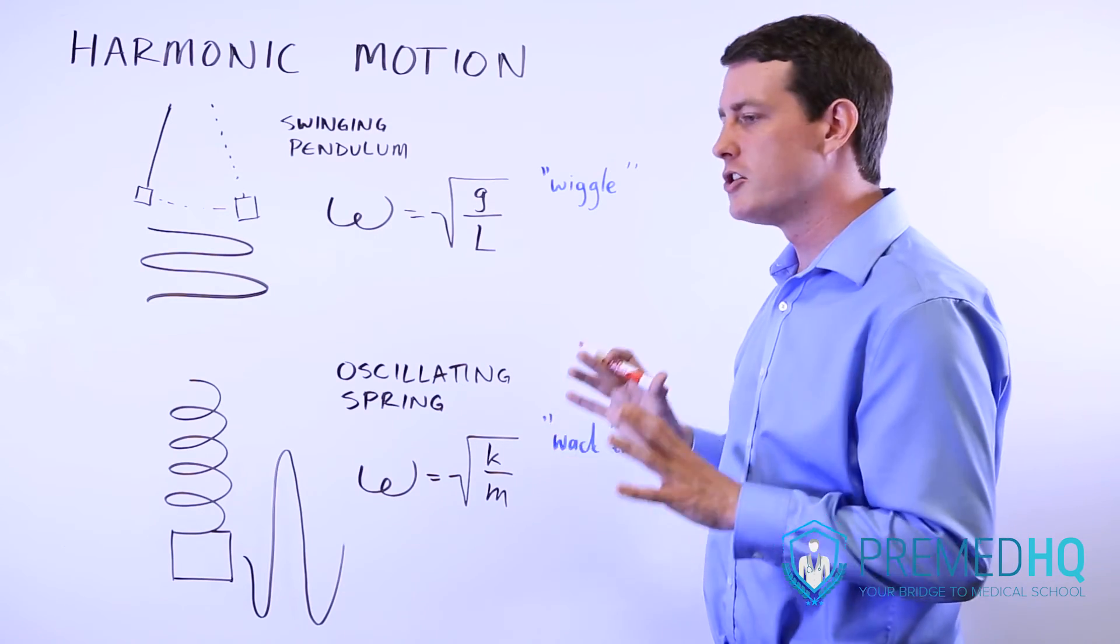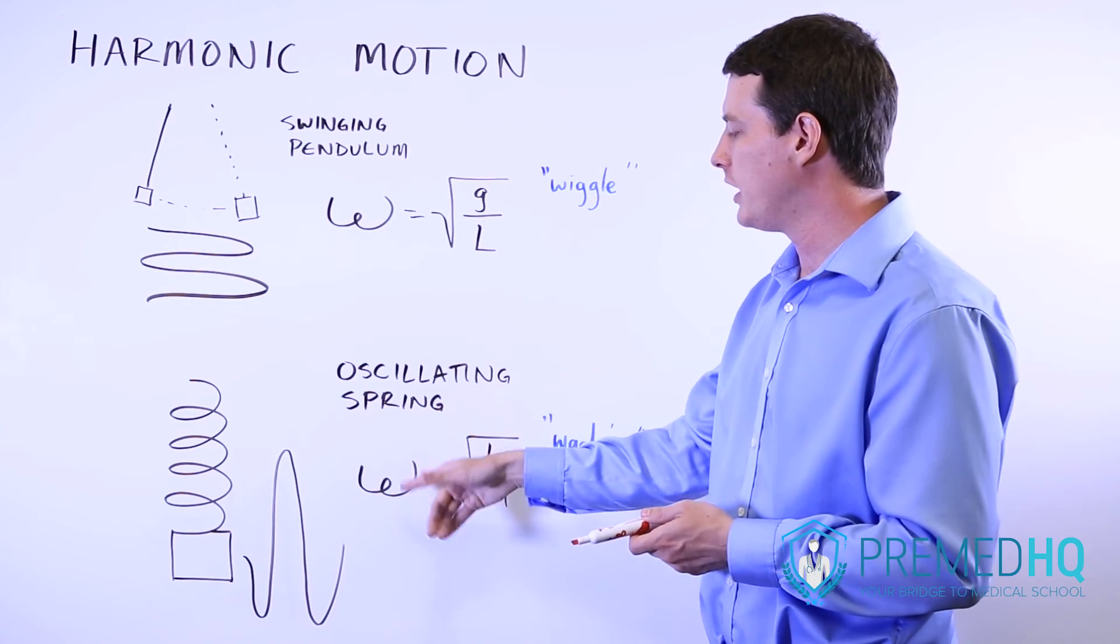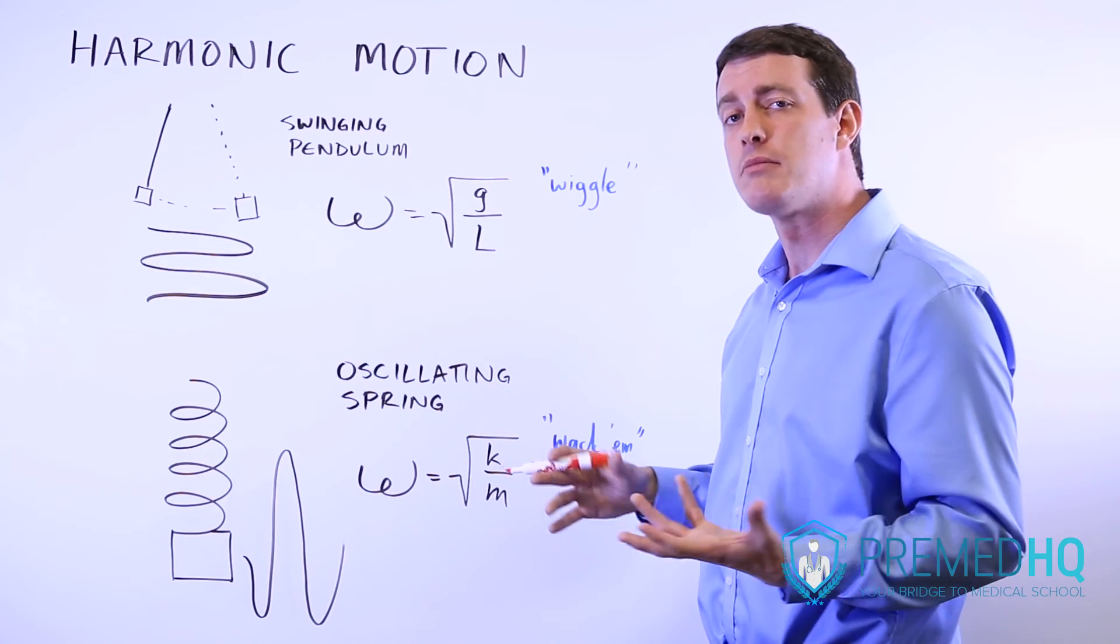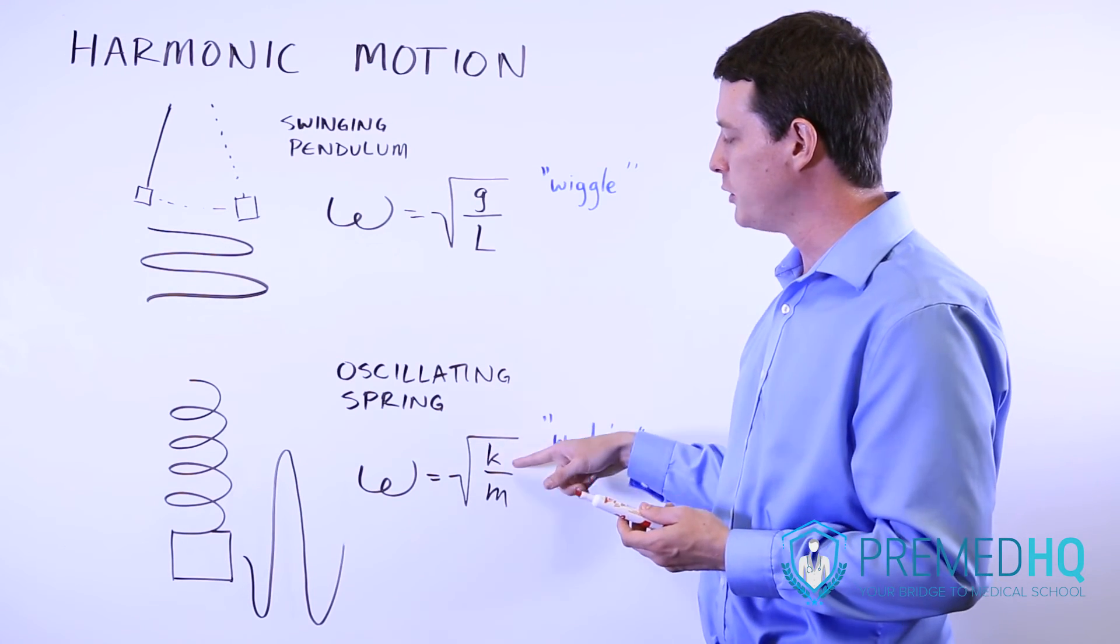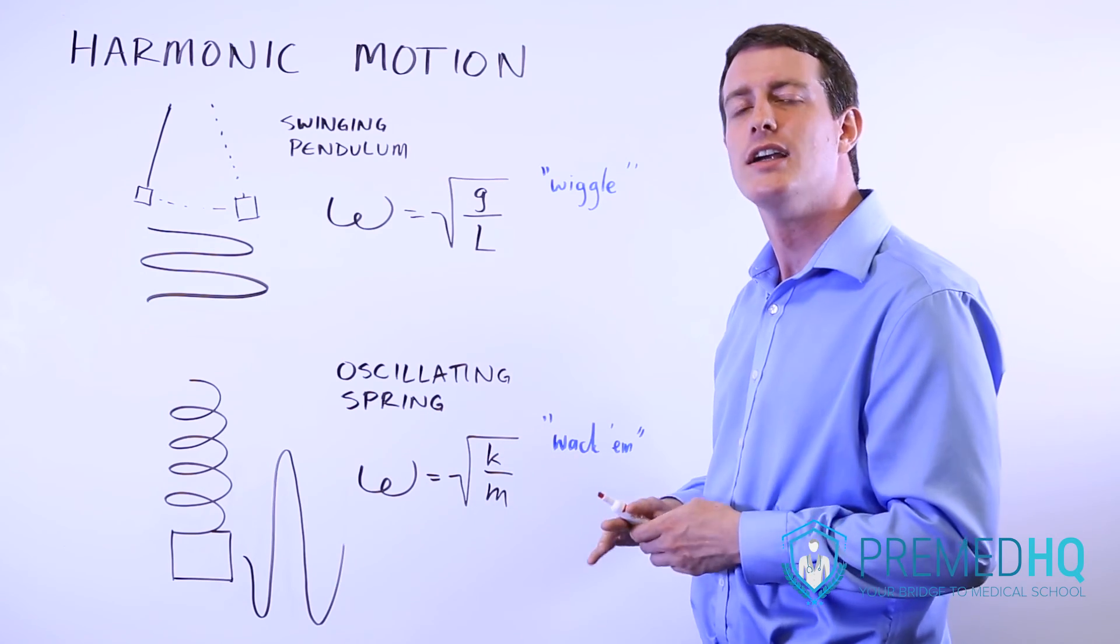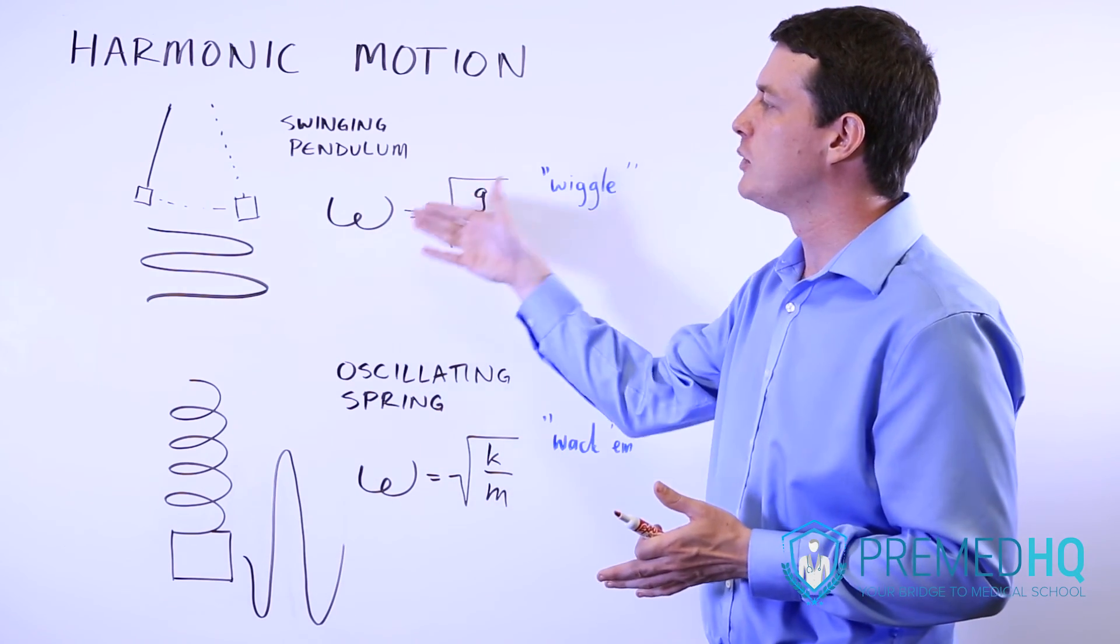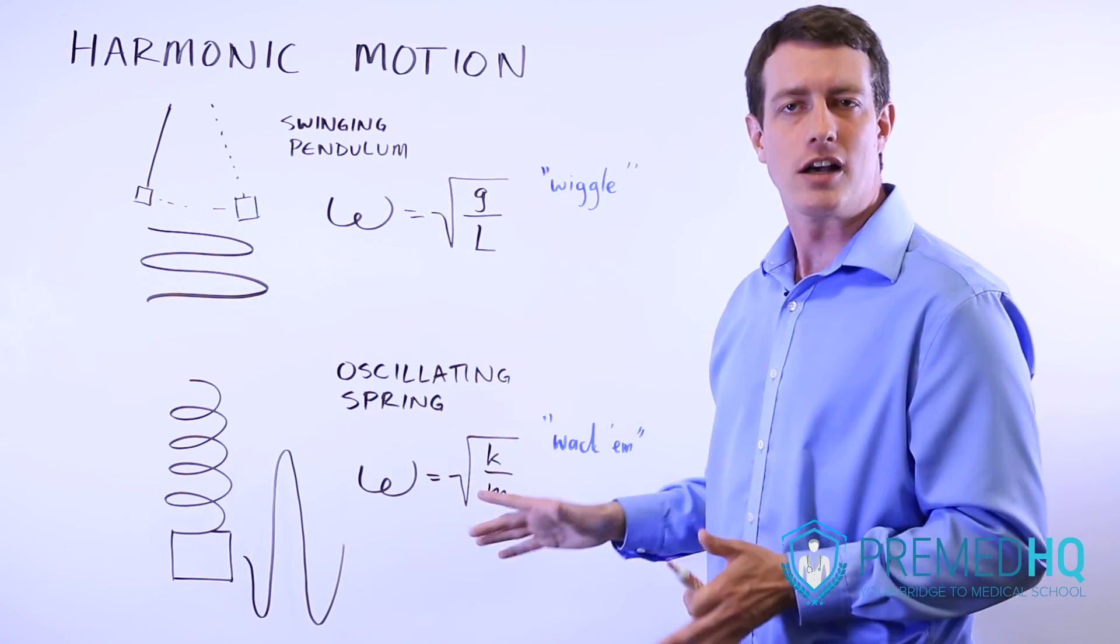And then your job is simply to realize that what will happen if, for example, we were to increase the spring constant of this, or if we were to double the mass or quadruple the mass, just realize that you're basically looking at the square root of the numerator or denominator. And you should be able to then figure out what factors will influence the frequency with which the pendulum or the spring oscillate.